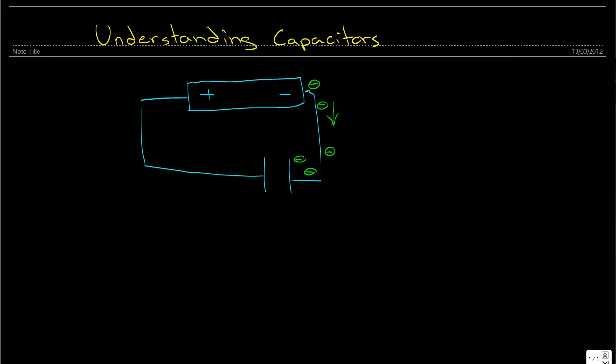The key thing to understand here is that no charge flows ever — even when the capacitor is charging — between this gap in between the plates. So electrons come in and they stack up on this plate because they're attracted to the positive terminal. If they could, they would want to get there.